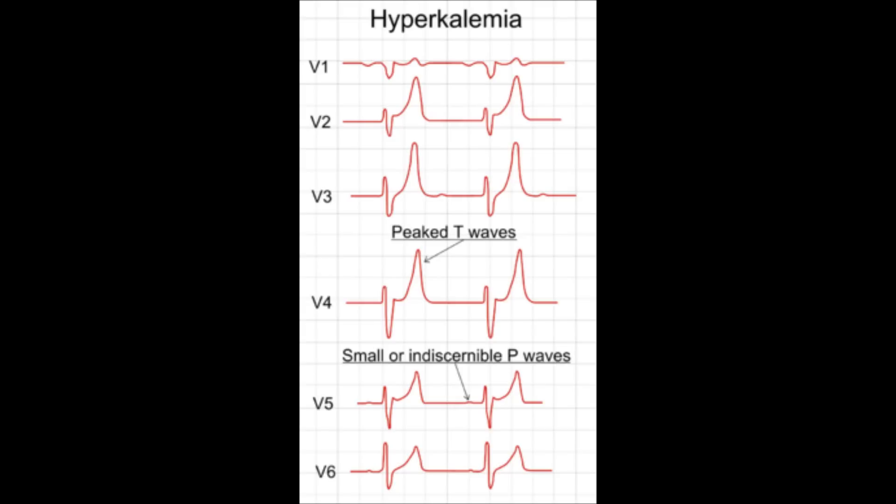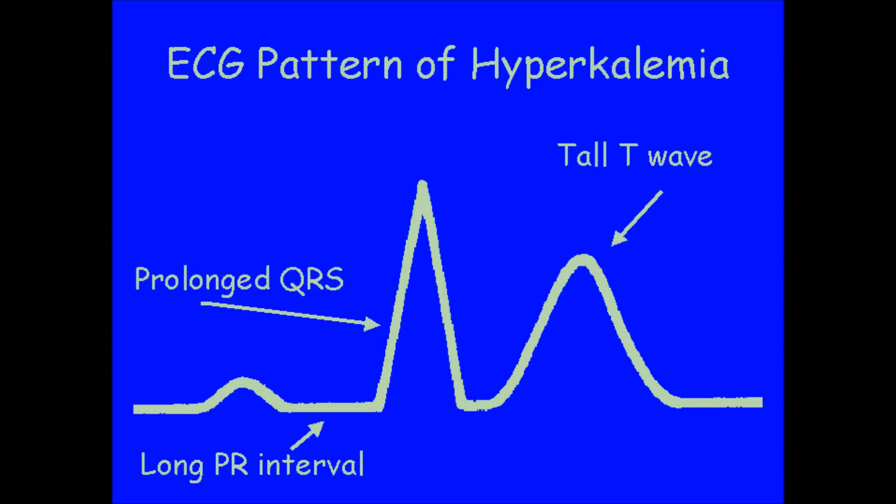On the monitor you would see peaked elevated T waves, widened QRS, and a prolonged PR interval. You would also see flattened P waves and ST depressions.